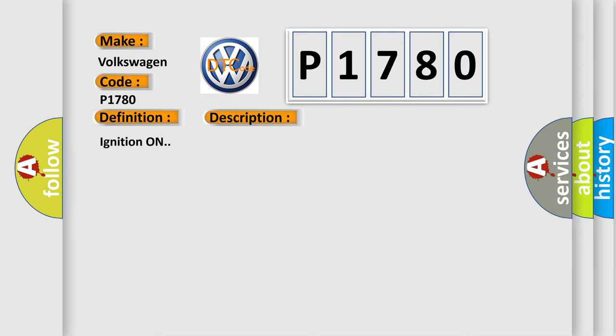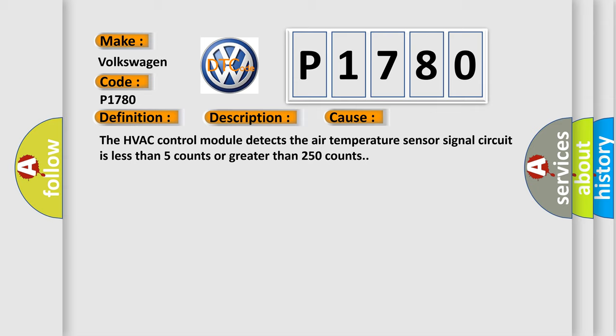And now this is a short description of this DTC code. Ignition on. This diagnostic error occurs most often in these cases: The HVAC control module detects the air temperature sensor signal circuit is less than 5 counts or greater than 250 counts.